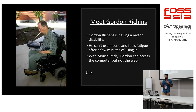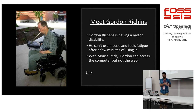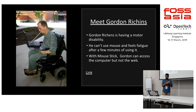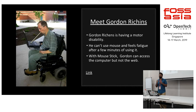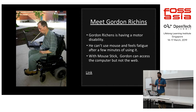Gordon is another example. Gordon has a motor disability, so he uses a mouth stick to type. Gordon cannot use a mouse because it frustrates him — he uses a mouth stick. Gordon can access the computer, but not the web, because the web is not accessible with a mouth stick.